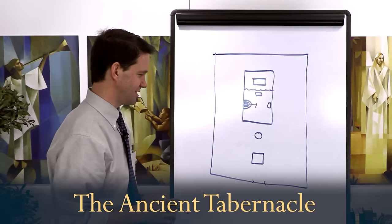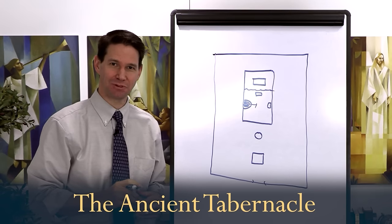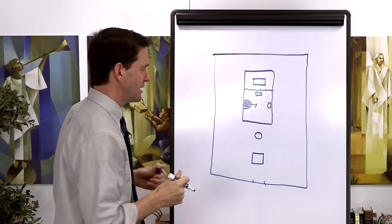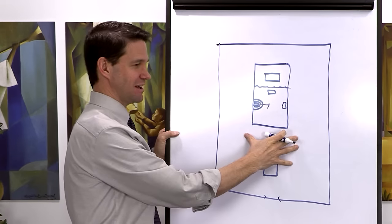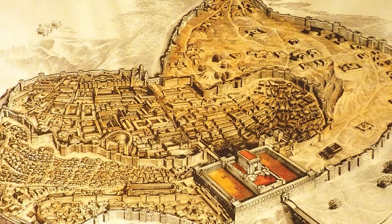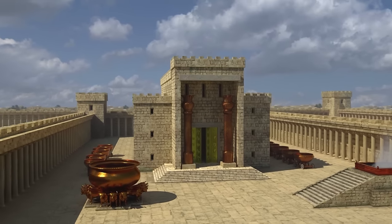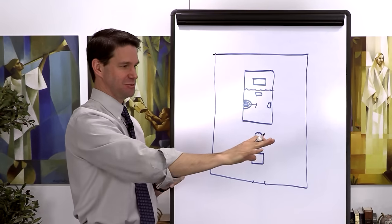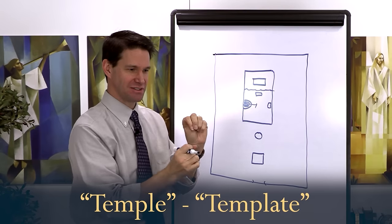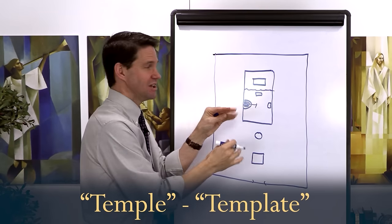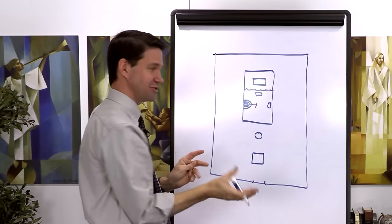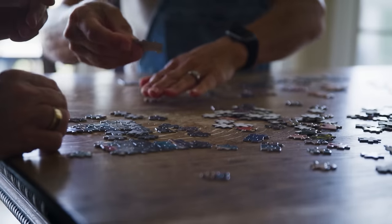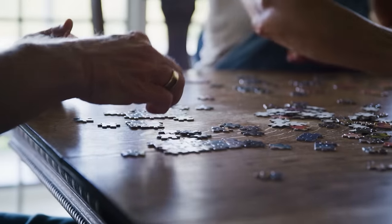Nephi is going to teach us the doctrine of Christ, but he's coming out of a context of Jerusalem with Solomon's temple on Mount Moriah, and Solomon's temple is built after the manner of the tabernacle in ancient Israel with Moses. As Taylor was saying, the word 'temple' is a template—there's a pattern, and you fit all the symbols into this pattern. The gospel of Jesus Christ fits all together.